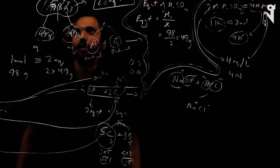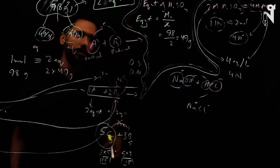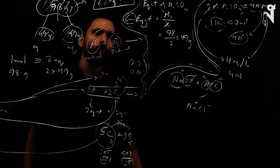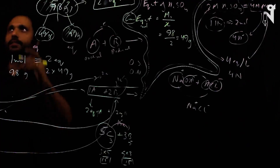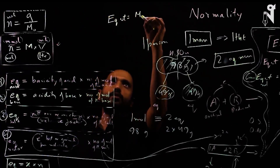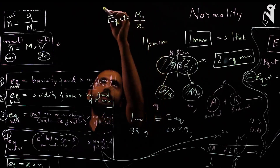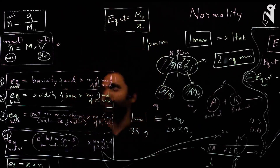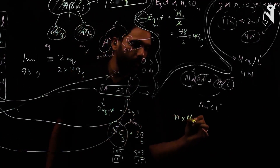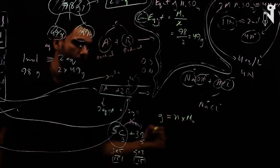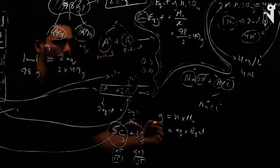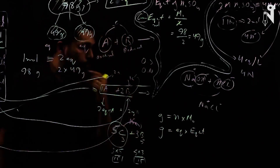Total mass of a substance = number of moles × molar weight. Similarly, total mass = number of equivalents × equivalent weight. Since equivalents = N × X and equivalent weight = molar weight / X, the X factors cancel out, giving the same total mass either way.